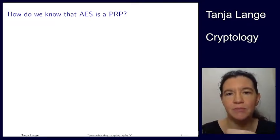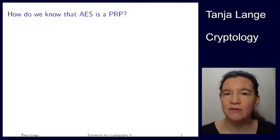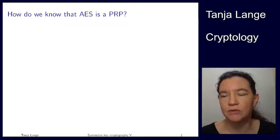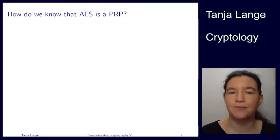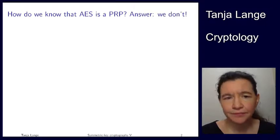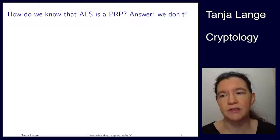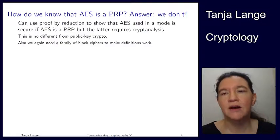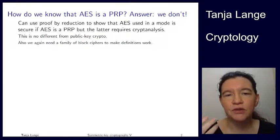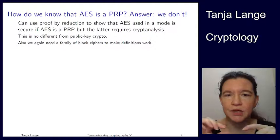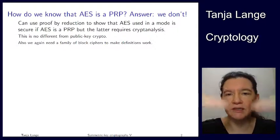So it's a permutation from n bits to n bits which behaves as a random permutation. Of course it's not random because it's pseudorandom, because it needs the key in there. So how do we know that AES is a PRP? In the end we don't. The best thing we can do is analyze it a lot.